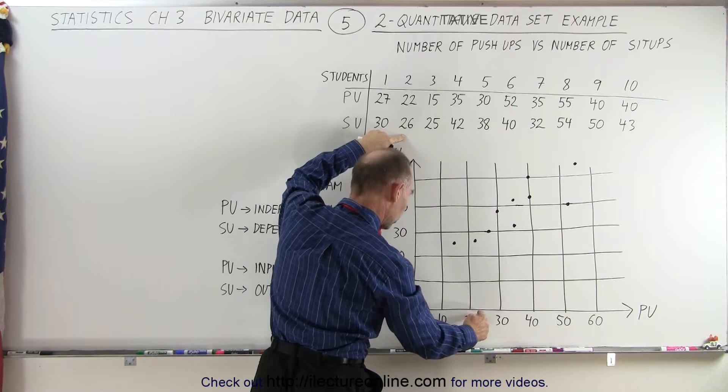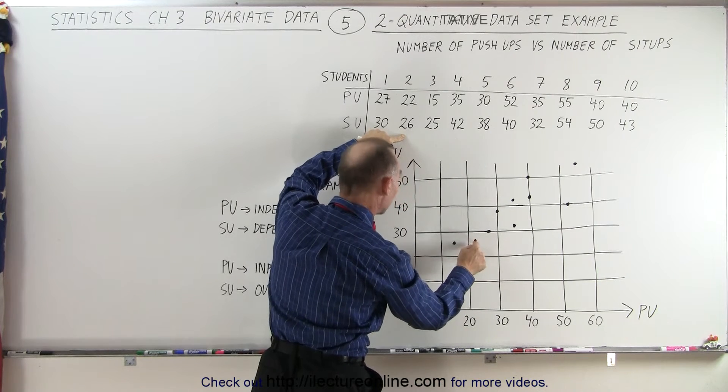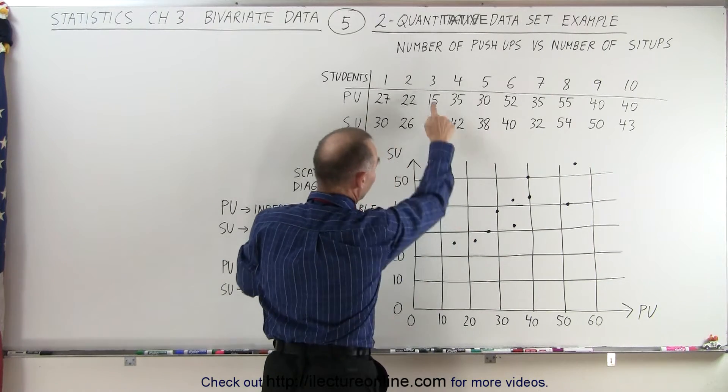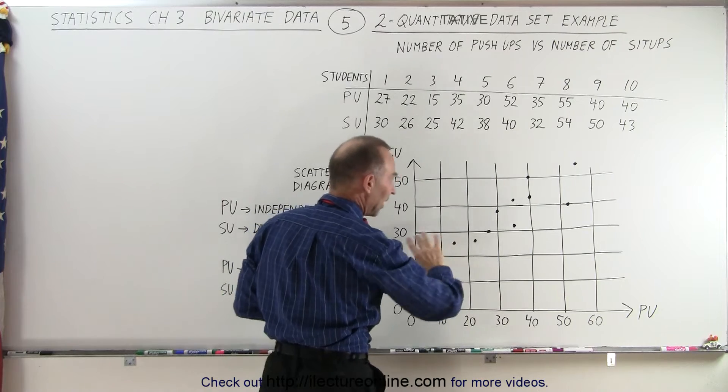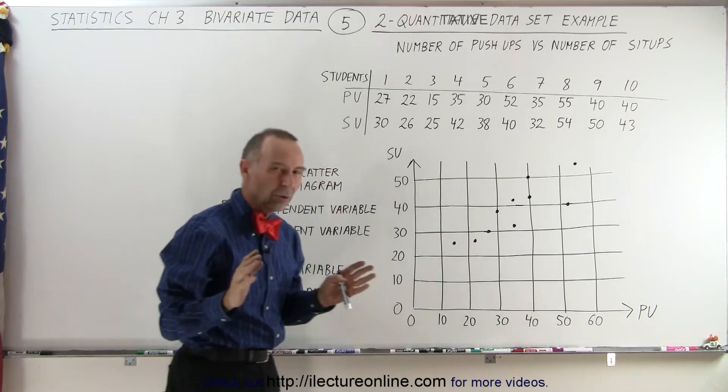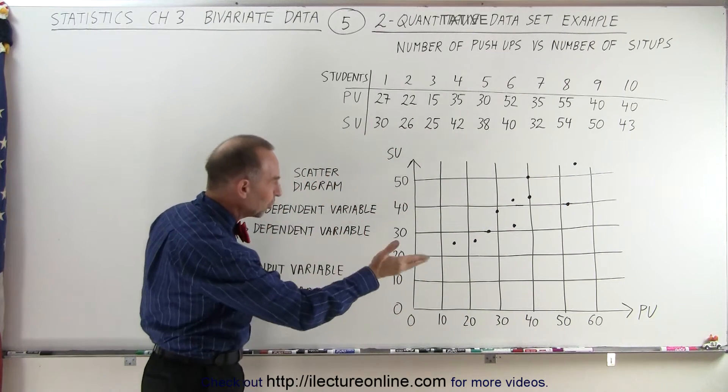Then we have 22 and 26. So we go 22 and 26. There's another data point and so forth. 15, 25, 15, 25. And so you can see that there's some sort of relationship between the push-ups and the sit-ups.